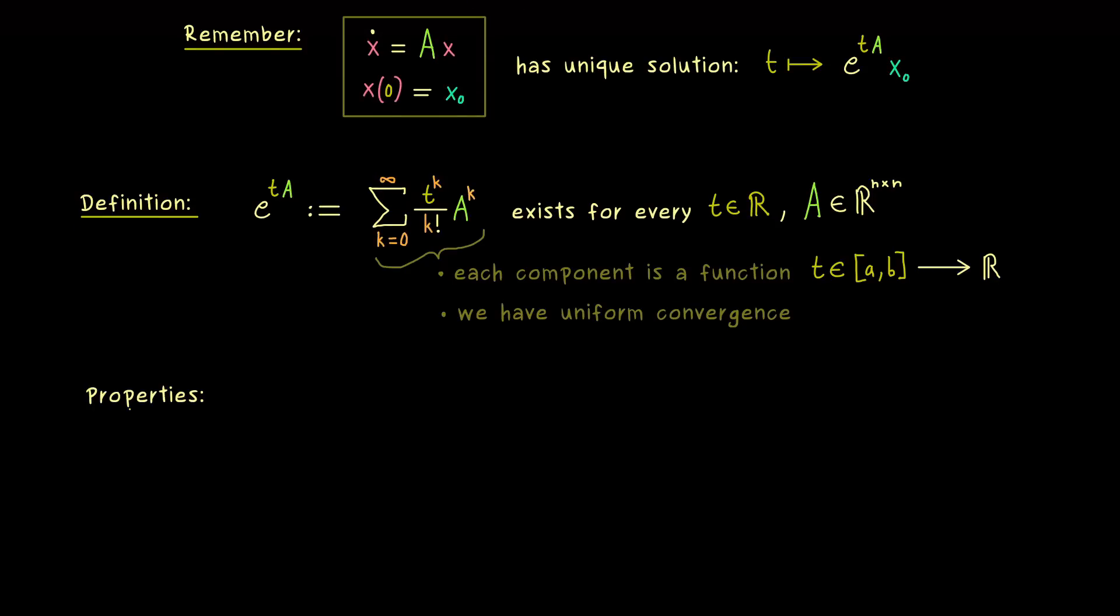Here in the following, we will just use the fact that we have this nice strong uniform convergence. Indeed, it implies that our matrix exponential is a differentiable function. We can quickly show that and also calculate the derivative of e to the power tA with respect to t. So we would write d/dt of the matrix exponential, and as always, a derivative is defined as a limit process.